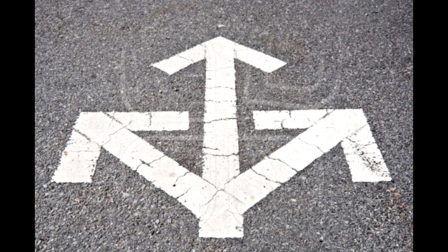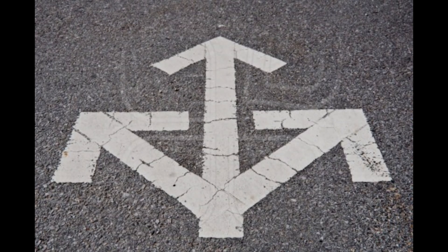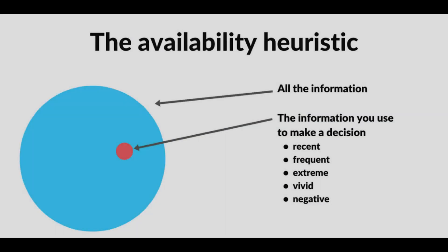There are three primary forms of heuristics: availability, representativeness, and anchoring and adjustment. We're going to discuss how all three of them work, why we use them, and give some examples of each of them. We're going to start with availability. The availability heuristic is when we make an assumption based on how easily something can be brought into our mind, or how available it is to us. We use this type of heuristic because people often do not have the time or resources to come to complete conclusions about situations in their life.